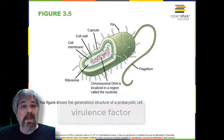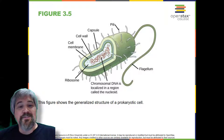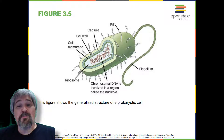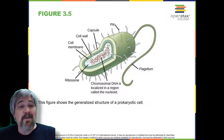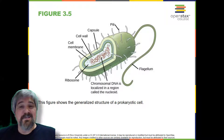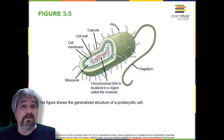Some prokaryotes have flagella, pili, or fimbriae. Flagella are used for locomotion, while most pili are used to exchange genetic material during a type of reproduction called conjugation, in which case the pilus is called the sex pilus.